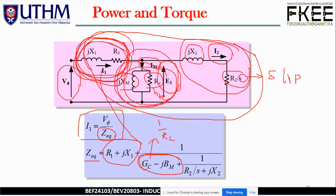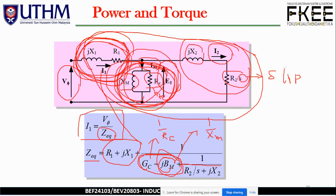Z_EQ equals R1 + jX1 (the primary stator part), plus the admittance of the excitation branch. G_C = 1/R_C is conductance, and B_M = 1/X_M is the susceptance of the magnetizing inductor. Then R2/S and X2 represent the secondary rotor part of the machine.